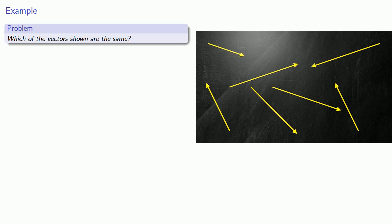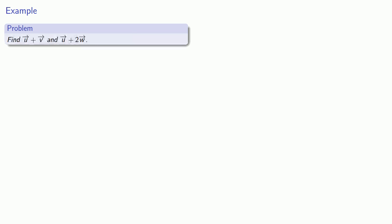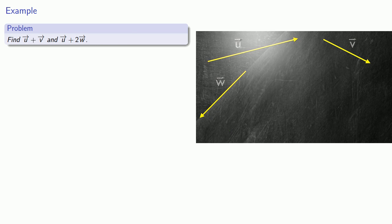It's important to remember that because we're treating a vector as a direction with a distance, the actual location of the vector doesn't matter. We can move them around from place to place as long as we don't change the direction they're pointing or their length. With these ideas in mind, suppose we want to add vectors — for example, suppose I want to add u plus v. I can read this as: follow whatever directions u tells you to do, and then follow the directions that v tells you to do.